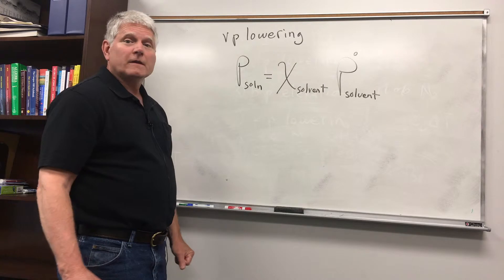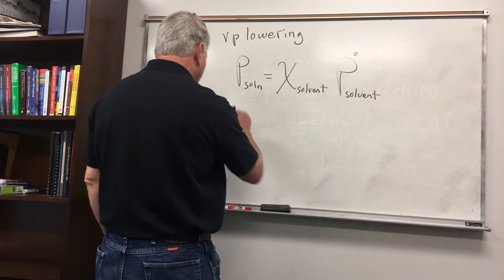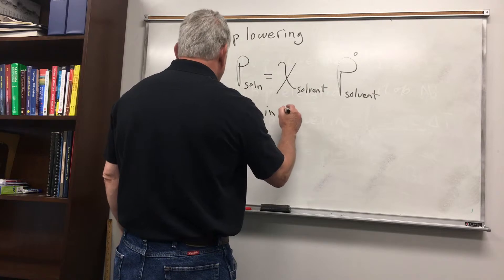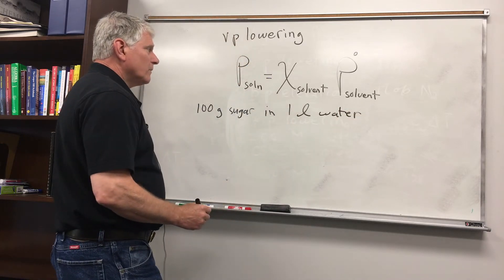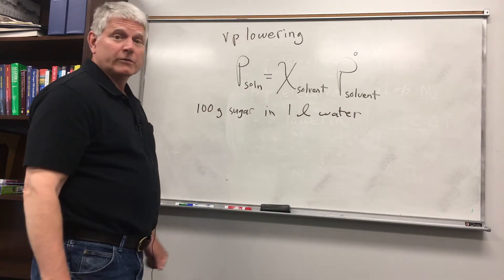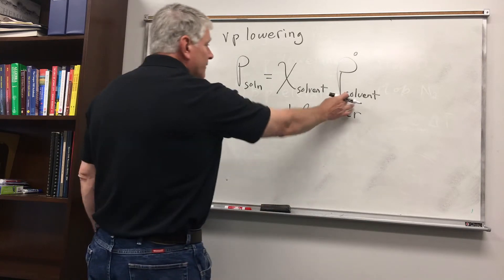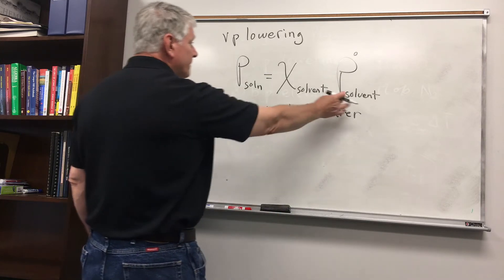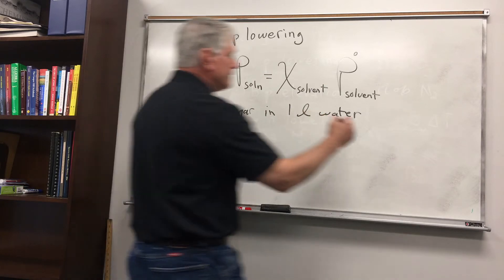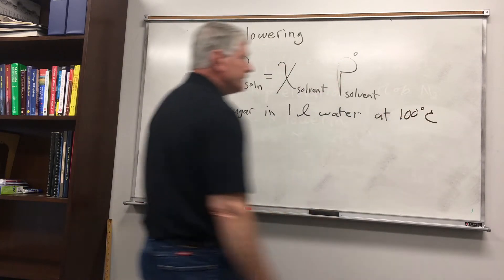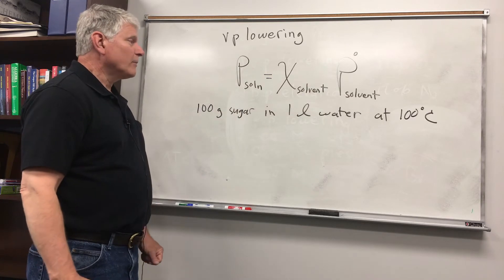Let's look at an example. Say we have 100 grams of sugar in one liter of water, and we want to know what the vapor pressure of that sugar solution will be. We need to find the mole fraction of the solvent and the vapor pressure of pure water. The vapor pressure of pure water can be found in a table, and we can calculate the mole fraction. Let's say this is at 100 degrees Celsius — the boiling point of water — so we'll see how far the vapor pressure is lowered.